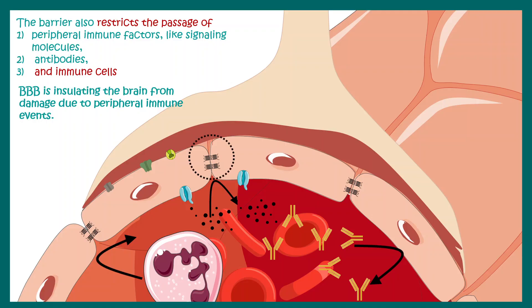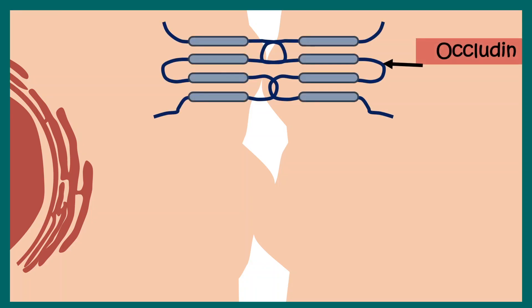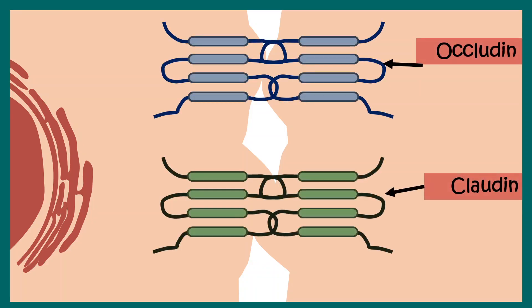Now let us zoom into the junction between two capillary endothelial cells and try to understand the selectivity filter, or the tight junction, in a bit more detail. The tight junction is formed of two major proteins: occludin and claudin. There are many subtypes but we are not going to get into that much detail. These claudin and occludin proteins are crucial for tight junction formation.